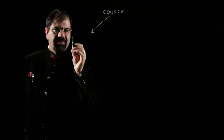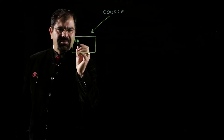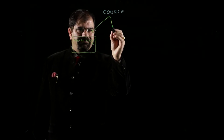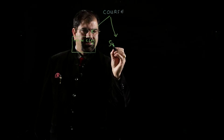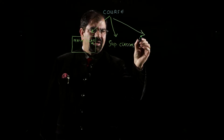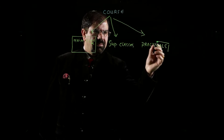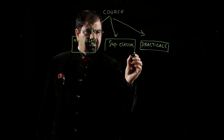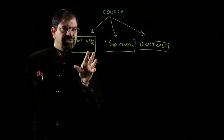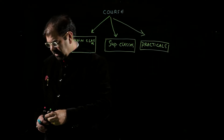First, we will be having main classes. Then the next section will be of supporting classes. And then we will be having practical classes. When you register for our course, you will get these three sets: one of the main class, one of the supporting classes, and then the practicals.